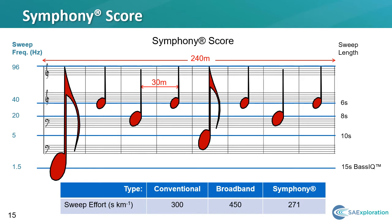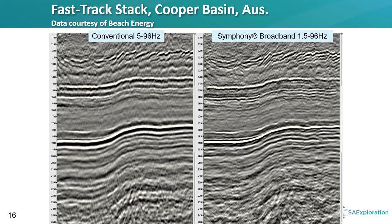At the start of the 3D, we acquired a 2D test line to compare the conventional sweep against the Symphony sweeps. All other acquisition parameters, including total source time per kilometer, were identical. Here we have a fast-track stack comparing the conventional 5 to 96 hertz data set against the Symphony 1.5 to 96 hertz data acquisition. The improvements of the increased bandwidth from the Symphony score are evident when comparing the images.